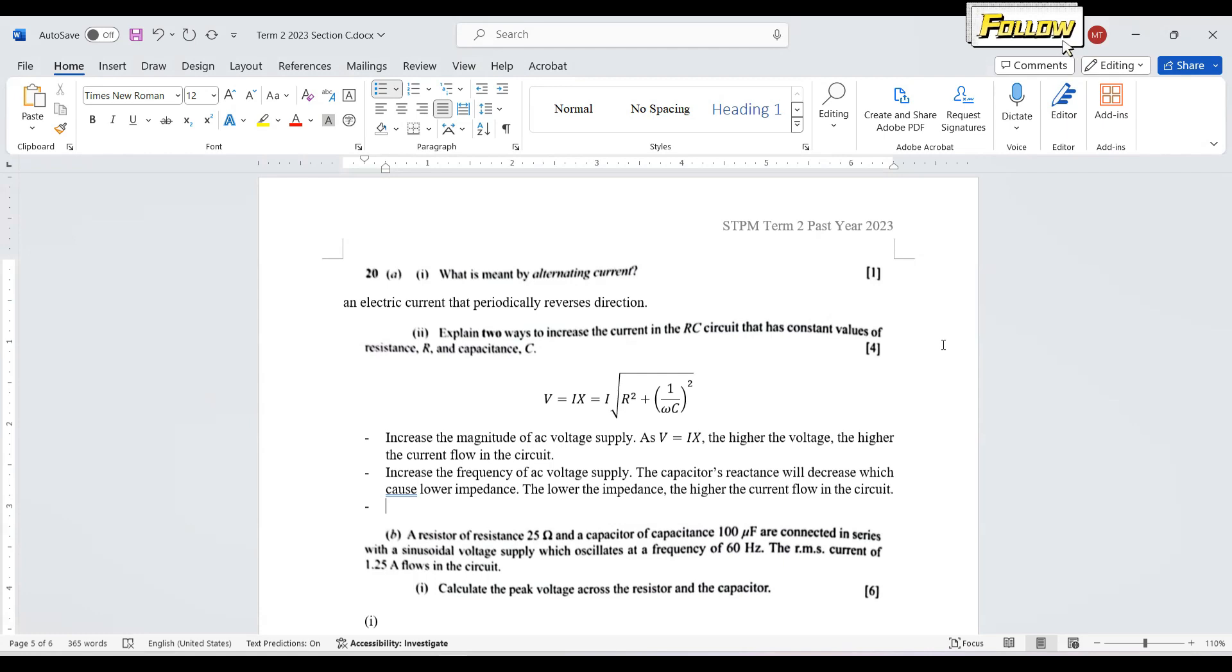Second, explain two ways to increase the current in an RC circuit that has constant values of resistance and capacitance. So R and C are constant. So four marks, let's review the formula.